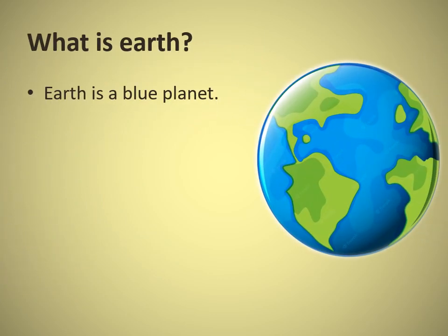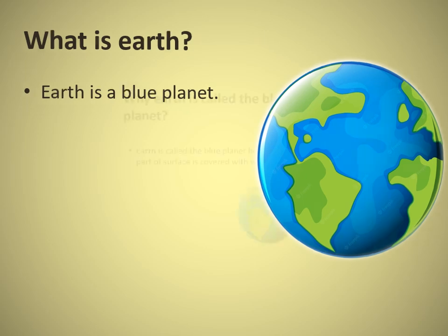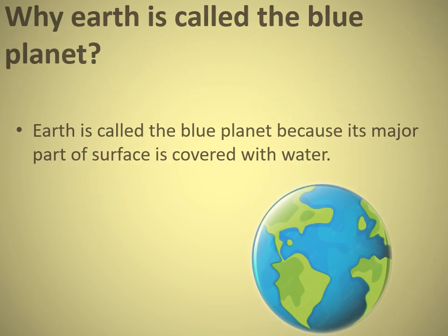What is Earth? Earth is a blue planet. Why is Earth called the blue planet? Earth is called the blue planet because its major part of surface is covered with water.